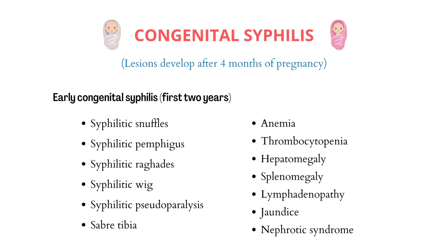The fourth S is syphilitic wig — the term 'wig' refers to a growth of black hair. The fifth is syphilitic pseudoparalysis, meaning swollen, painful ends of long bones with periostitis leading to restricted movements. The sixth is saber tibia, meaning a thickened, deformed tibial bone due to subperiosteal bone formation.